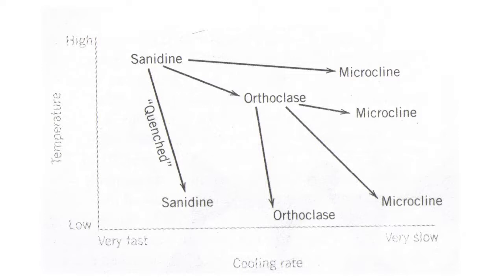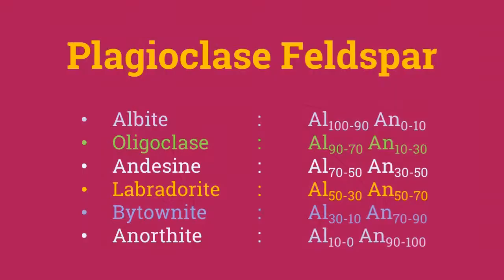The graph shows possible temperature-cooling rate paths that Sanidine may follow. Quenching is a process of cooling high-temperature Sanidine so quickly that the resulting mineral preserves all the characteristics of the high-temperature state.